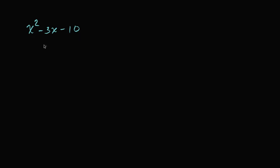We have a quadratic expression here: x squared minus three x minus 10. What I'd like to do in this video is factor it as the product of two binomials. In other words, I want to write it as the product (x plus a) times (x plus b), where we need to figure out what a and b are going to be. I encourage you to pause the video and see if you can figure that out.